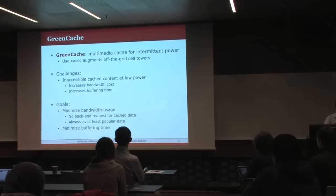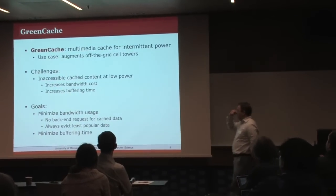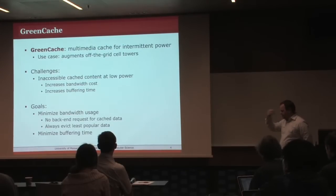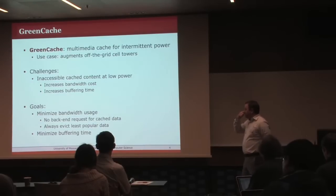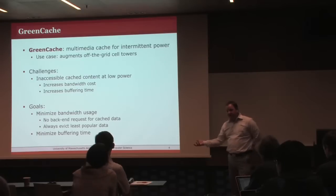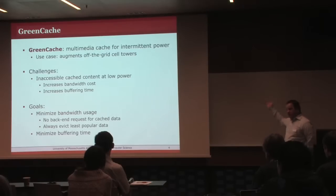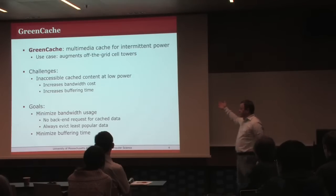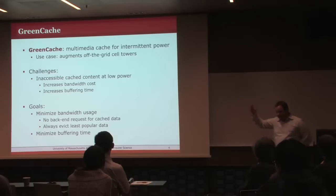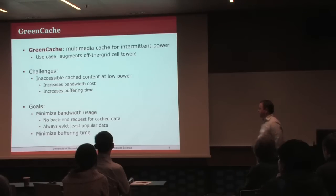The idea of green caches is to build a multimedia cache for intermittent power and demonstrate its capabilities in off-grid cell towers. The challenges are: what happens when you cannot access cached content due to insufficient power, because that has an impact on quality, increased uplink bandwidth consumption to the server, increased latency, and increased buffering time. We want to minimize all of that. This is the regular caching problem, plus intermittent power — we want to minimize having to retrieve content from the original server, minimize bandwidth usage, and minimize buffering times.